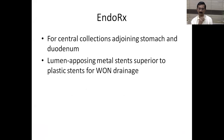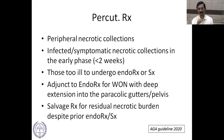Endotherapy for pancreatic collections is preferred when collections are centrally located, adjoining the stomach or duodenum. Metal stents or plastic stents are used to aid drainage. Percutaneous interventions are used for peripheral collections, infected or symptomatic collections in the early phase less than two weeks, for patients too ill for endotherapy or surgery, as an adjunct to endotherapy for walled-off necrosis with deep extension into paracolic gutters or pelvis, and as salvage therapy for persistent necrotic burden.